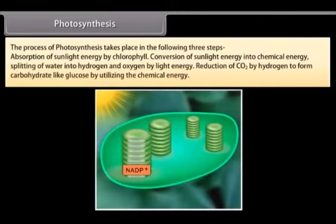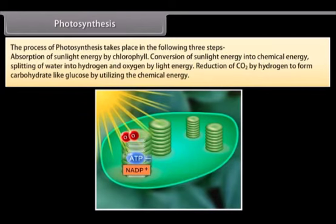The process of photosynthesis takes place in the following three steps. Absorption of sunlight energy by chlorophyll. Conversion of sunlight energy into chemical energy.